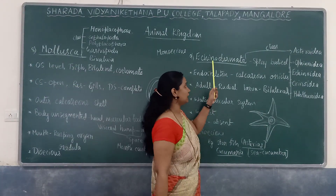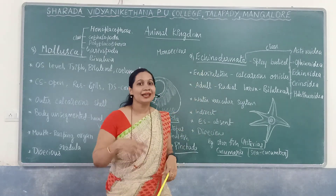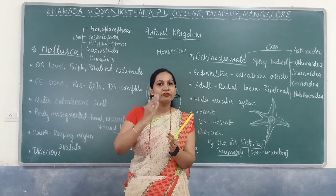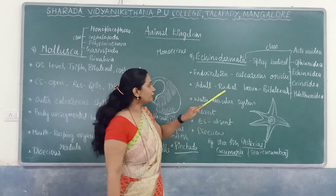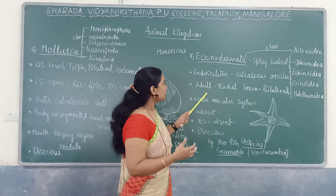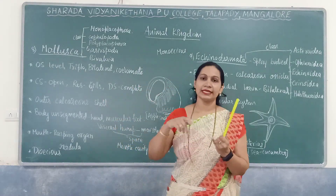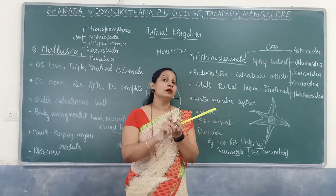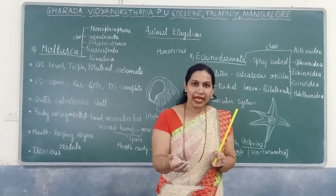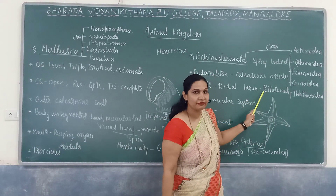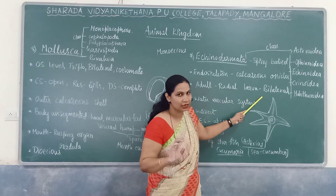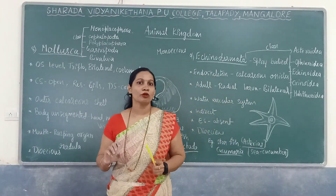The next phylum is phylum Echinodermata. 'Echino' refers to spiny and 'derma' refers to skin — they are spiny-bodied organisms. Their endoskeleton consists of calcareous ossicles, as seen in starfish. They have organ system level of organization, are triploblastic, and coelomate. Regarding symmetry, adults show radial symmetry while larvae show bilateral symmetry — a special feature of echinodermata.